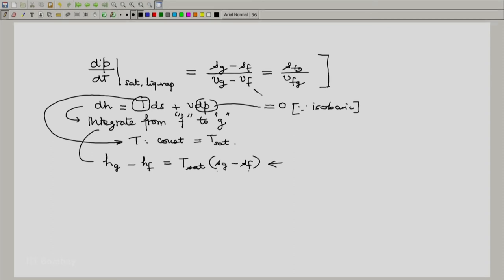Now use the resulting expression for Sg minus Sf from this relation. Substitute back here and you will get dp by dt saturation along the liquid vapor line equals Hg minus Hf divided by T sat Vg minus Vf. This can also be written down as Hfg divided by T sat Vfg.